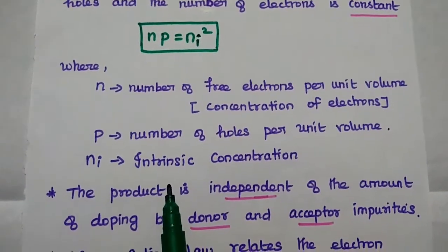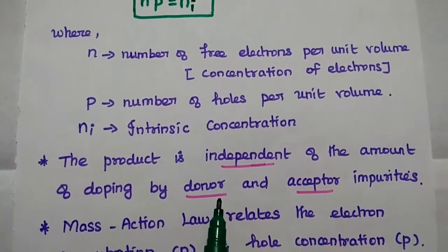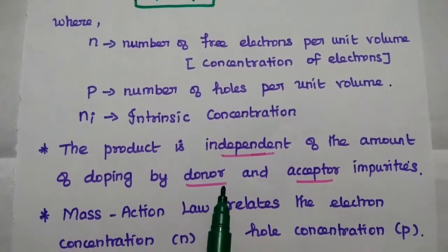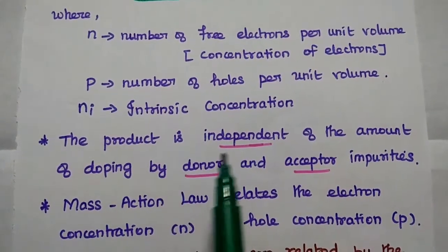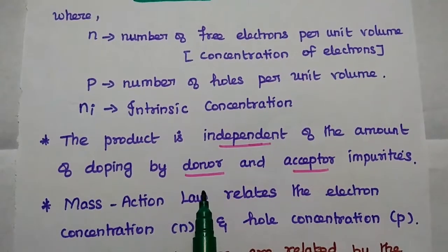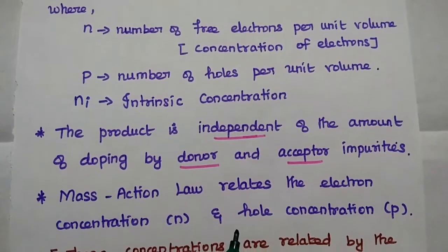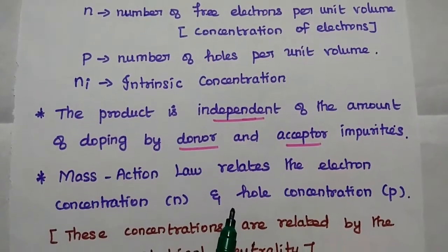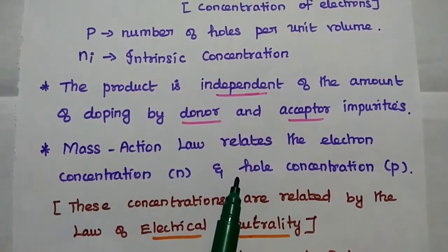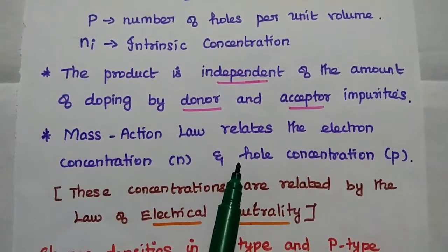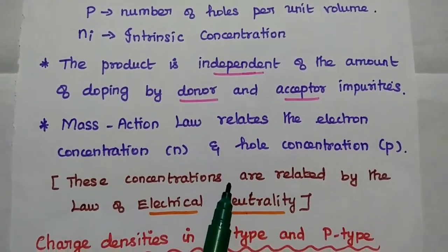This product is independent of the amount of donor and acceptor impurities doped in the semiconductor. So this product is independent of donor atoms as well as acceptor atoms in the semiconductor. The mass action law is mainly used to relate the electron concentration and hole concentration of the semiconductor material.